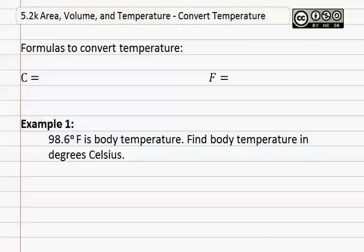5.2K: Area, volume, and temperature - converting temperature. There are formulas to convert temperature between Celsius and Fahrenheit.